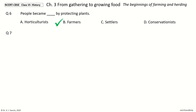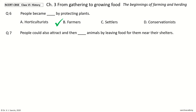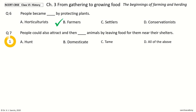Question 7. People could also attract and then do what to animals by leaving food for them near their shelters. The options are: hunt; domesticate; tame; all of the above. And the answer is tame.